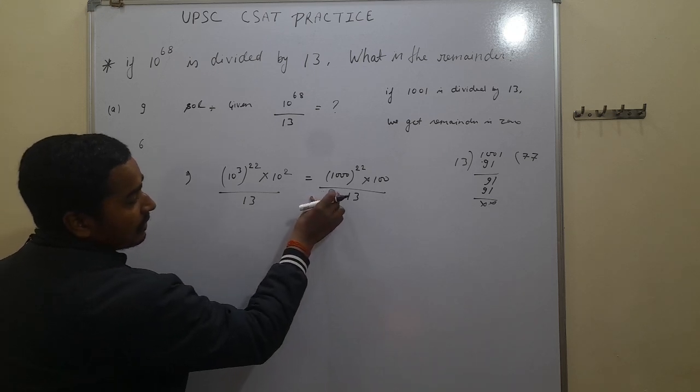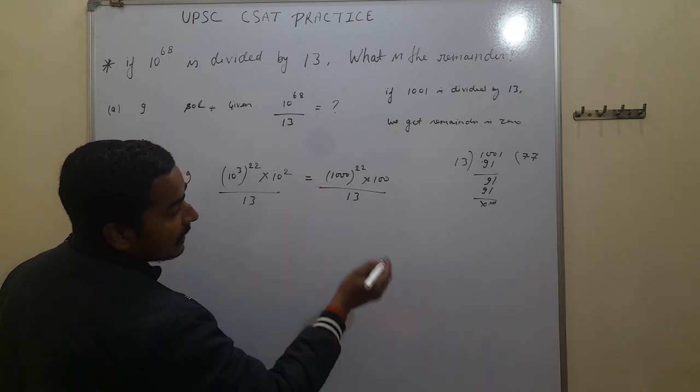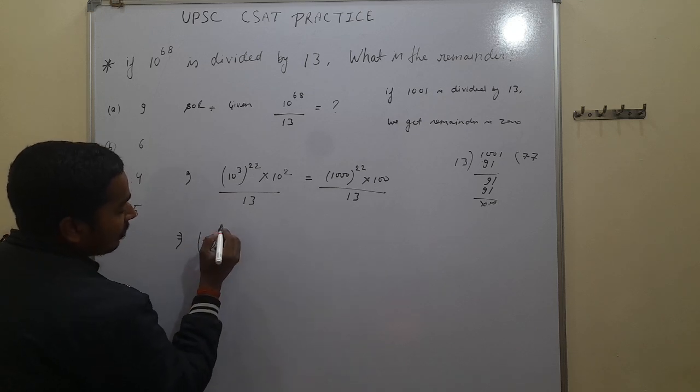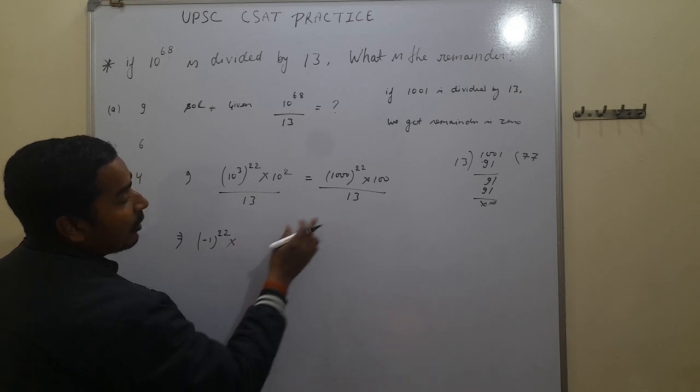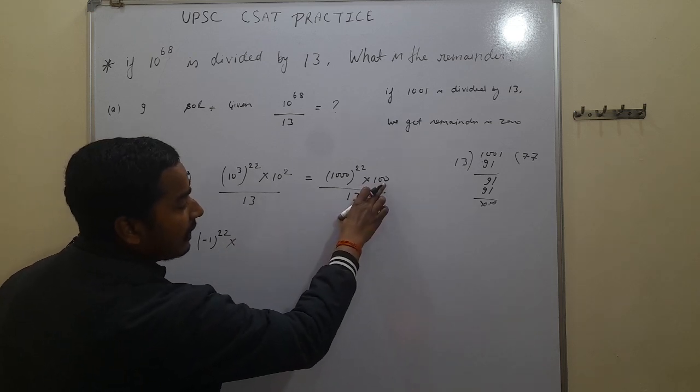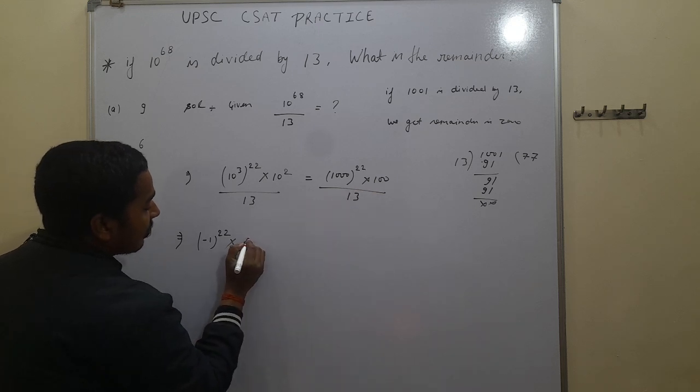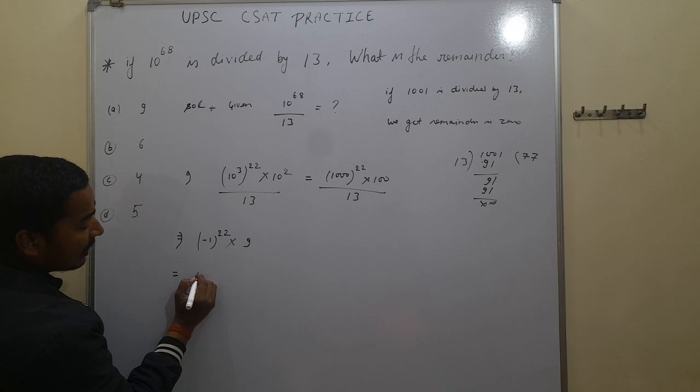And here is 1000, so we divide 1000 with 13, we get remainder is minus 1. Here minus 1 to the power of 22. And when we divide 100 with 13, we get remainder is 9. From here, this is minus 1 to the power of 22, we get plus 1.